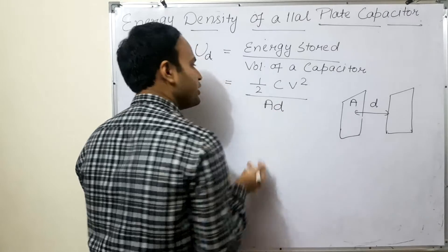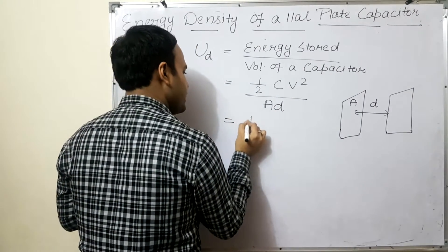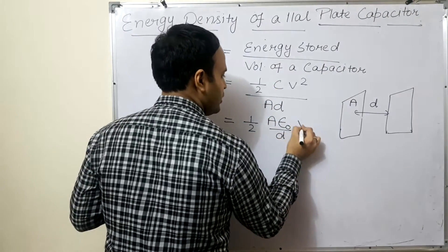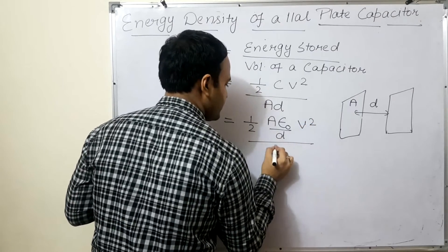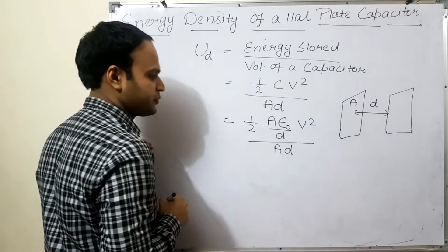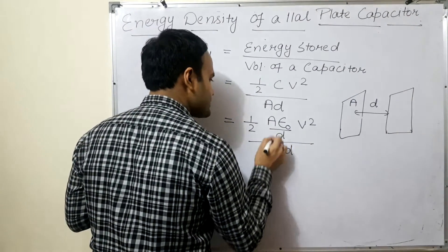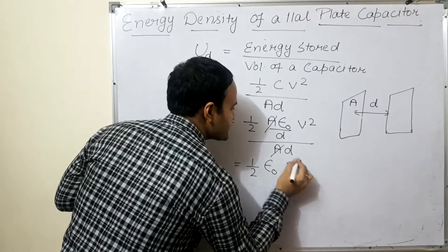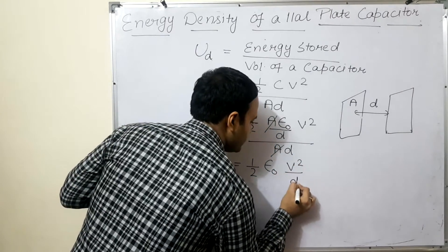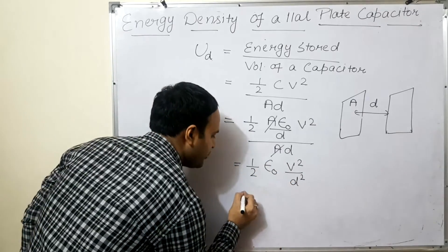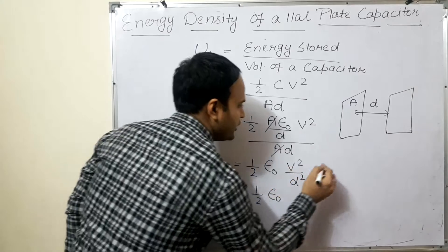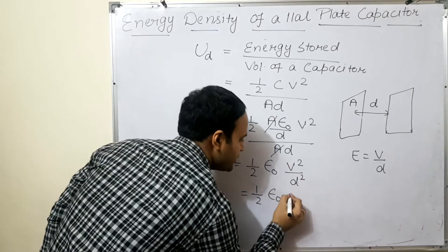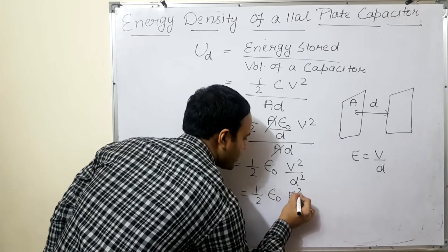Area into length gives us the volume. So here we have: energy density = ½ × C × V² divided by (A × D). Substituting C = ε₀A/D, the area A cancels out, giving ½ε₀V²/D². Now V/D is the potential gradient, which equals the electric field E. So energy density = ½ε₀E².